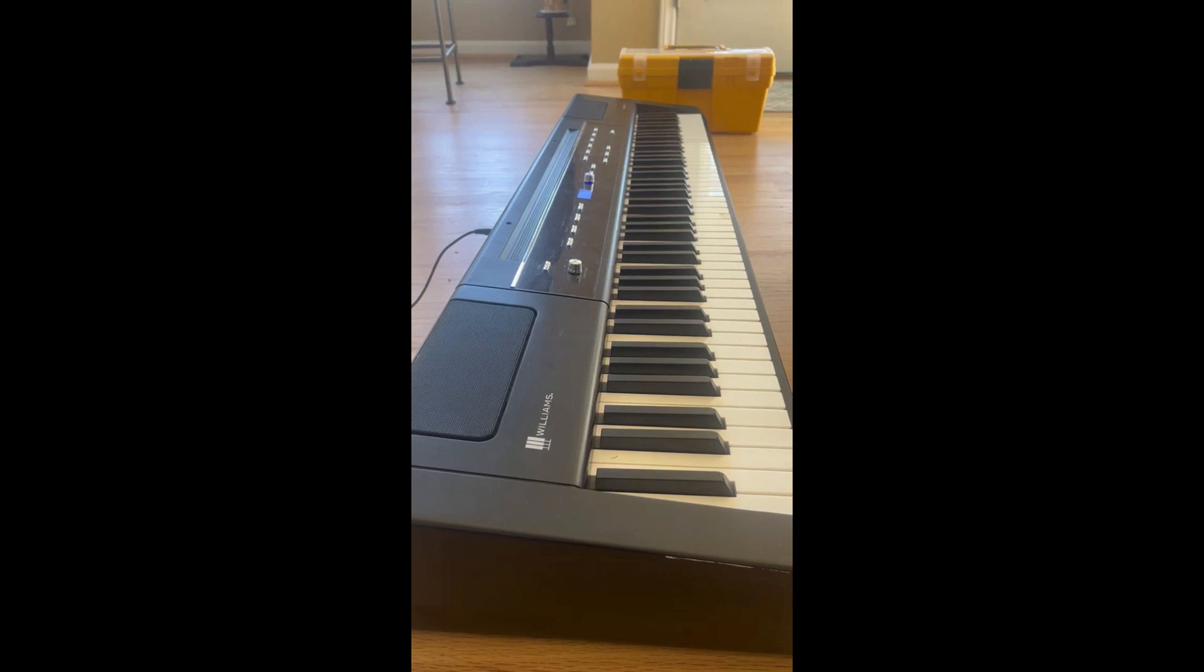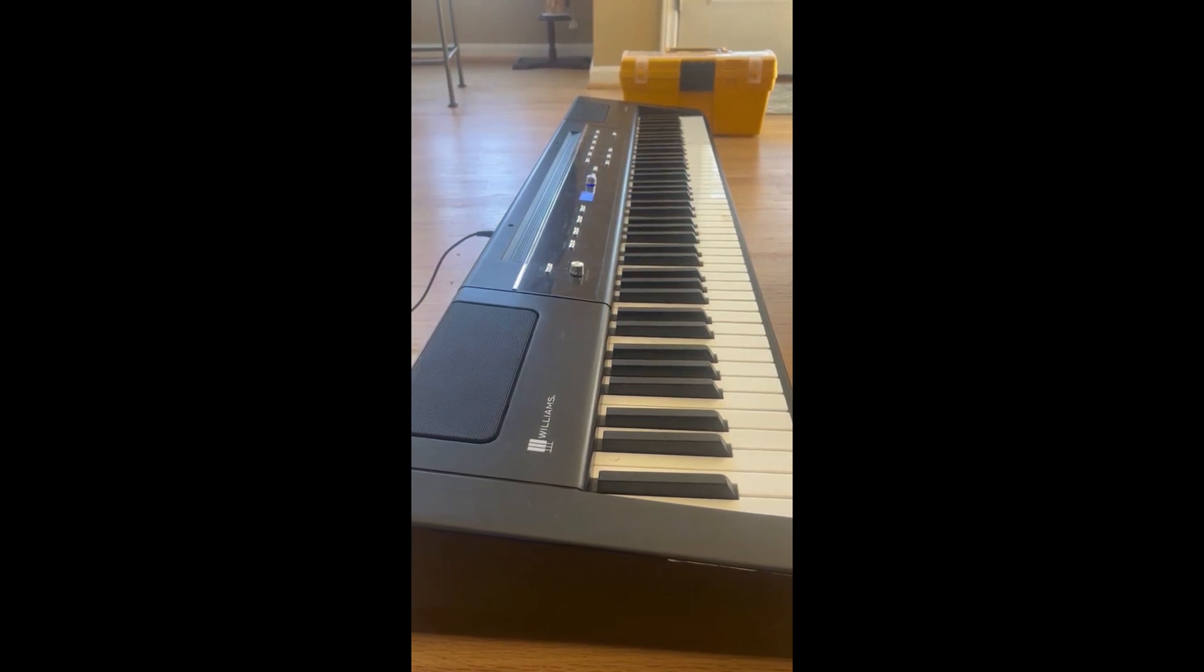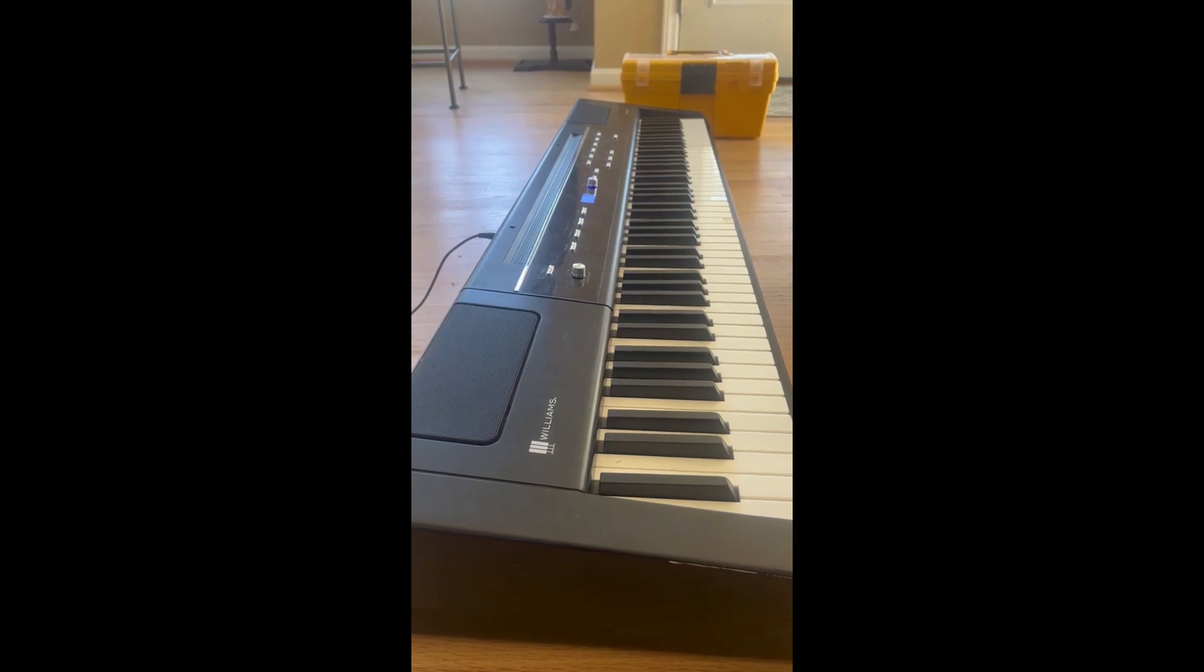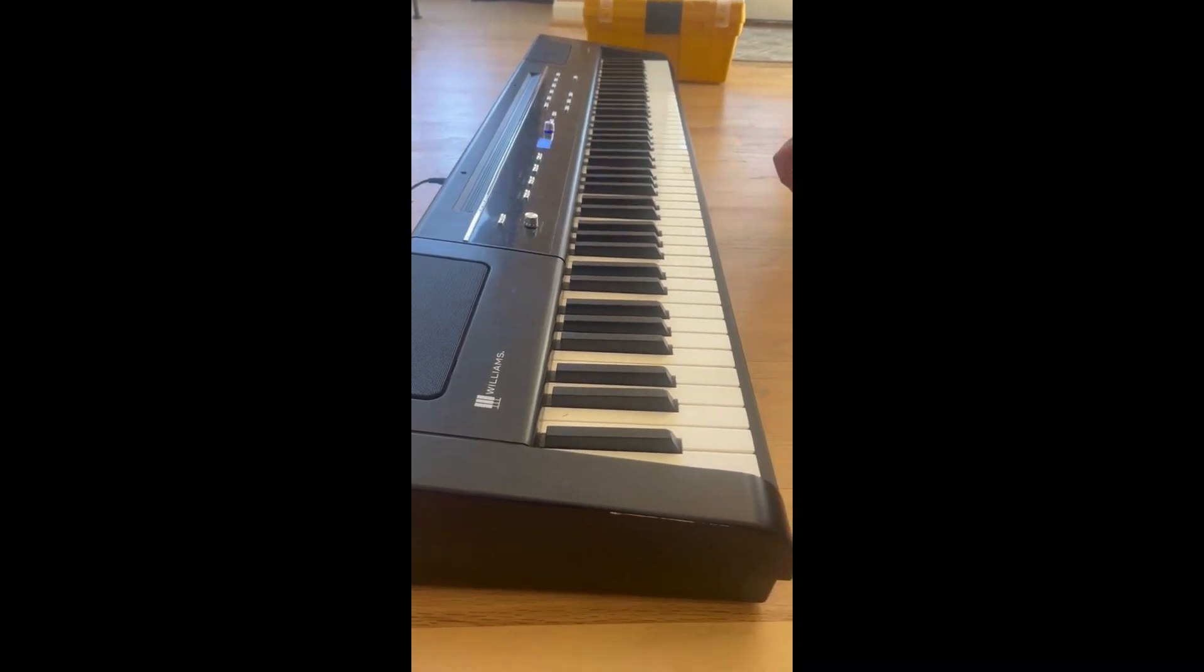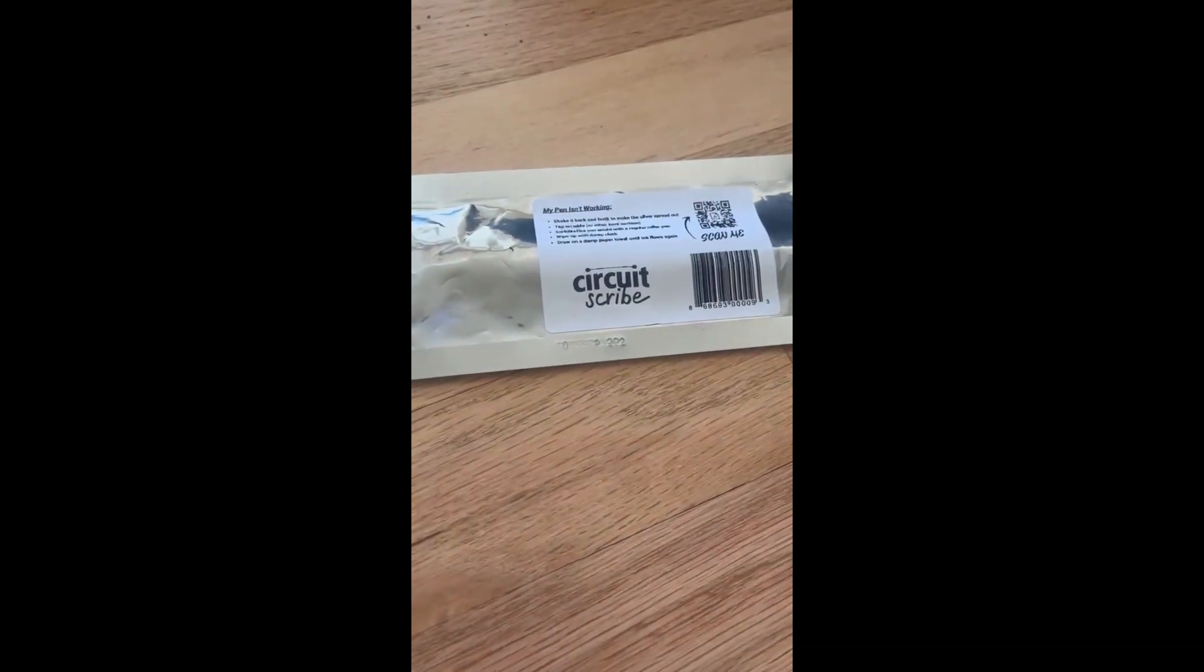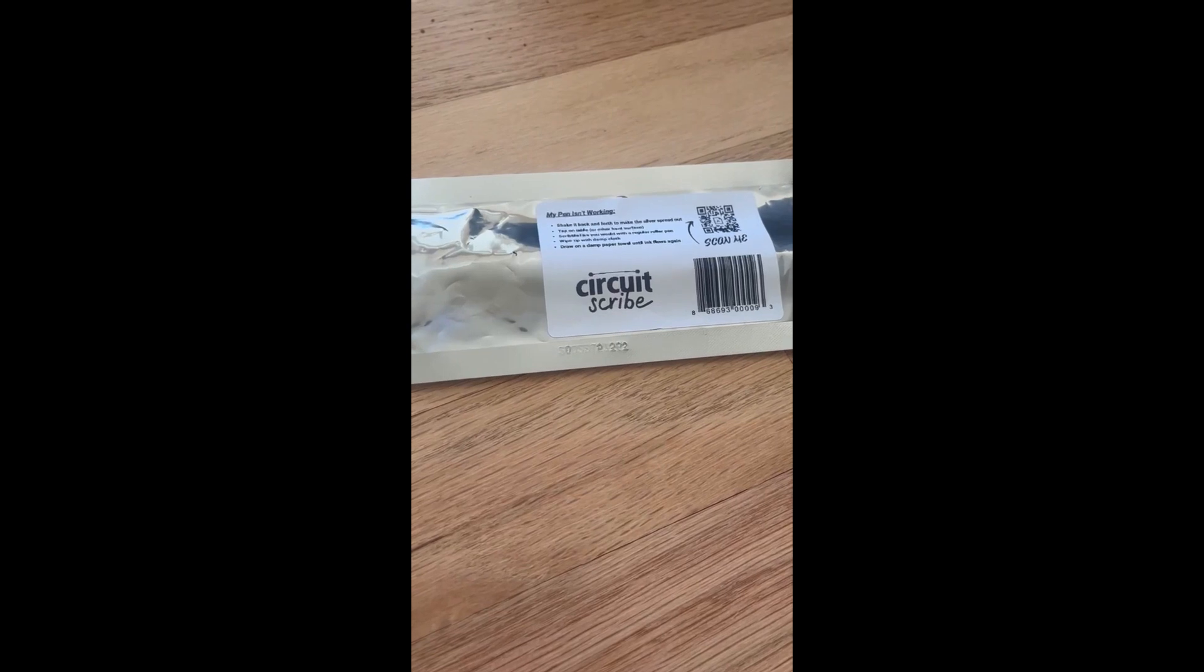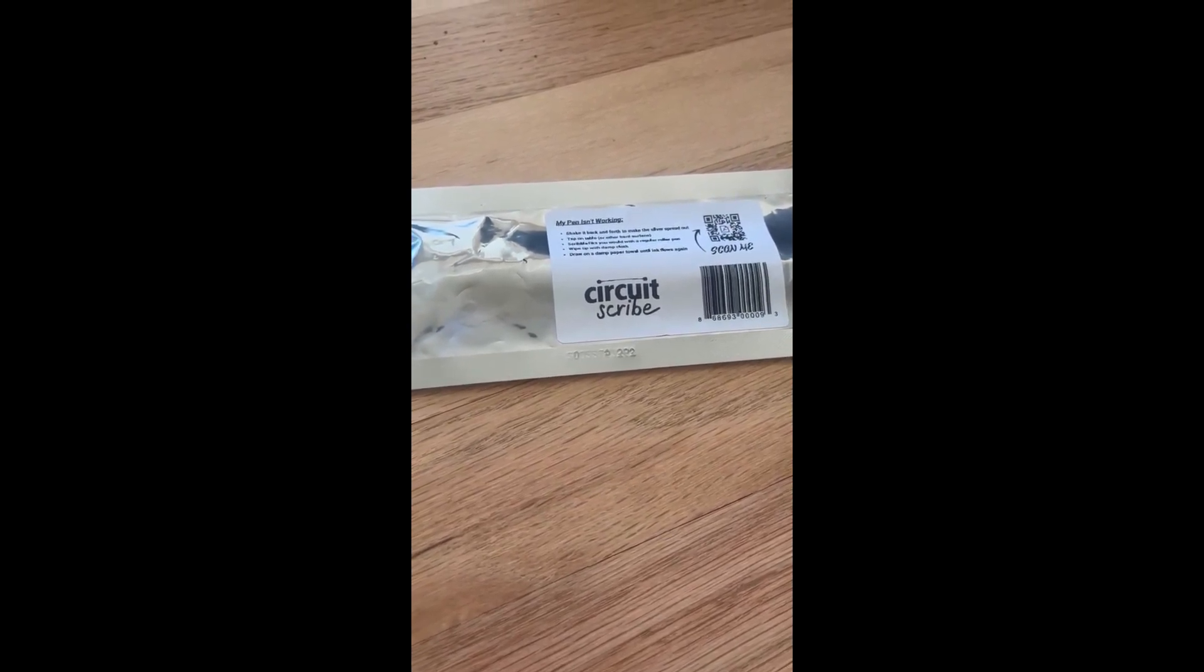This time we're going to try a technique where we use what's called a circuit scribe pen. It's basically something that you can buy off Amazon for seven or eight dollars and it will draw in the circuit. It should work a lot better and I'll have a link to the pen below this video.